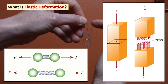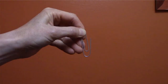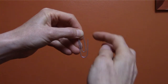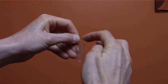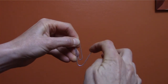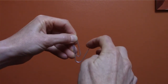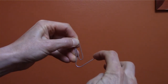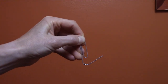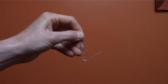What happens if you pull on the material hard enough to break the spring or bond between the atoms? In that case, the material will not go back to its original position, and that is called plastic deformation. When I only put a little force on the paper clip, it deflects and then goes back to its original position. But if I put more force on it — enough force — the paper clip bends and doesn't return to its original position. This is called plastic deformation.